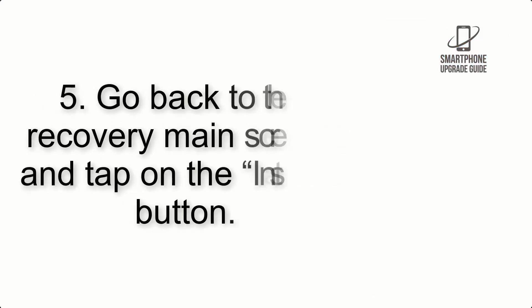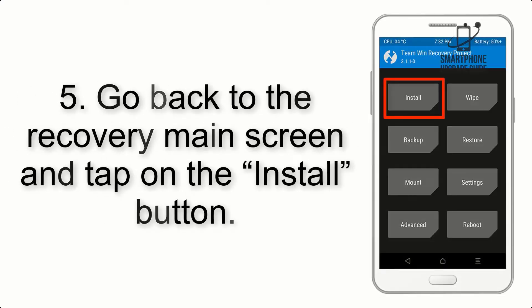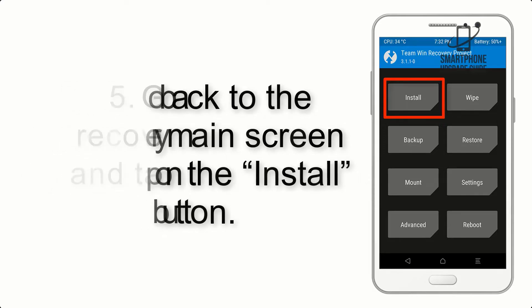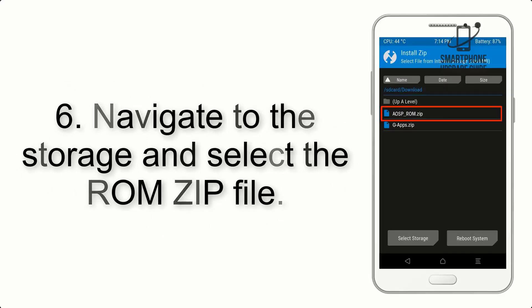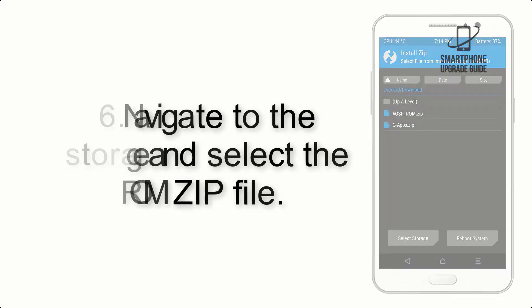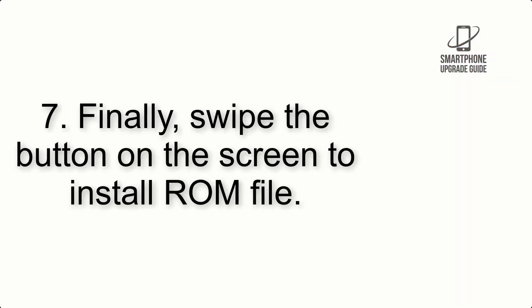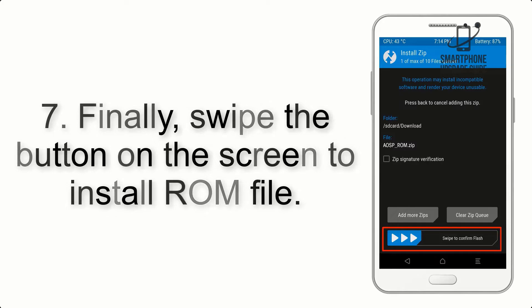Step 5: Go back to the recovery main screen and tap on the Install button. Step 6: Navigate to the storage and select the ROM zip file. Step 7: Finally, swipe the button on the screen to install the ROM file.